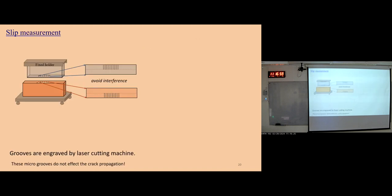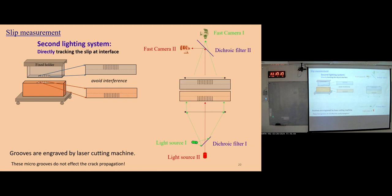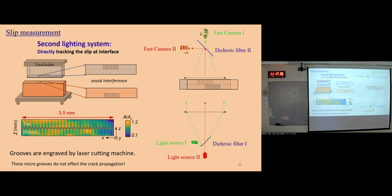How do we do this? We use the same block, but now use laser cutting to engrave many micro-grooves as markers at the interface for both the top and bottom blocks, but only half-width each. When we put them together, there is no interference between the top and bottom. We then introduce a signal lighting system to illuminate and observe these marks. Here I show a snapshot of the interface — you can see clearly the top and bottom markers. During sliding, we can do image correlation to calculate the slip displacement with resolution less than one micrometer.